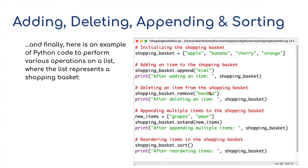When dealing with lists or arrays, we can do a variety of different things. I've just added a few here for you to have a little go at. I've created a shopping list, a shopping basket, and in this one-dimensional array, I've got apples, bananas, cherries, and oranges. As before, I can do a dot append and add kiwi to the list. I can also do a dot remove and remove the banana from the list. I can add new items to the list, appending multiple times, so new items is grapes and pears, and I can do what I call an extend, and then also I've got a shopping basket, where I can do a dot sort, and I can reorder these items. So again, I'm going to go back to Python, and I'll show you this, and show you how this works.